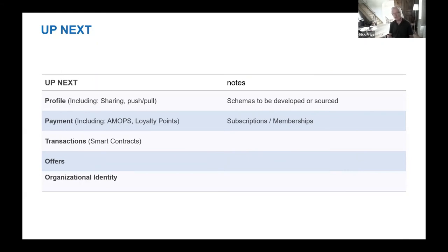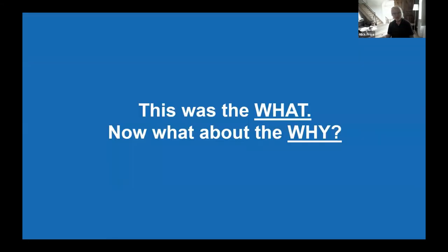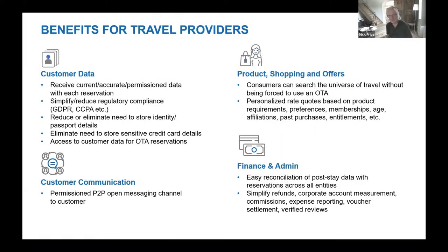Coming up next, we're going to be working on profile — including sharing, how it's shared, and profile schemas — payments, transactions and how they can best be represented contractually, offers, and organizational identity. Now let's look at the benefits for travel providers. I've organized these into four parts: customer data, product shopping and offers, customer communication, and finance and admin.